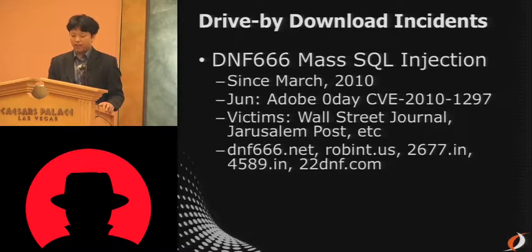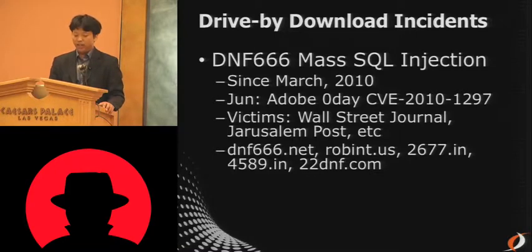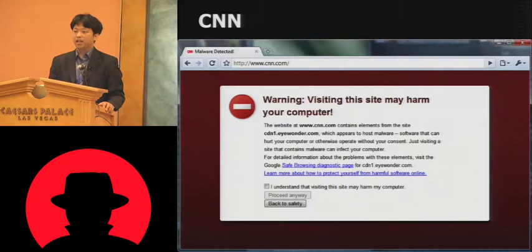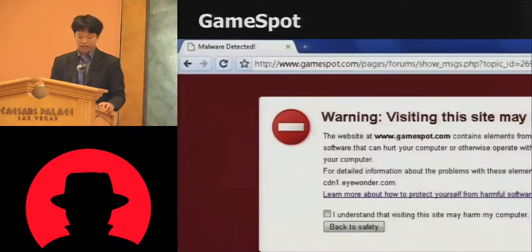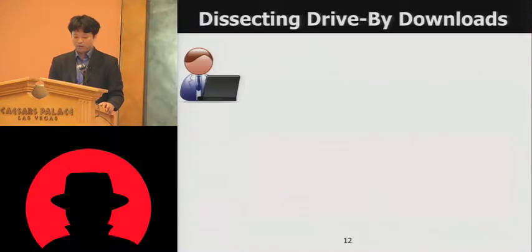DNF 666 MassSQL injection started since March 2010. The last wave happened about three to four weeks ago, and it was initially using an Adobe zero-day. The victims included the Wall Street Journal, Jerusalem Post, and in the past it happened to CNN, GameSpot, U.S. Treasury, Sony PlayStation, and the Washington Post.